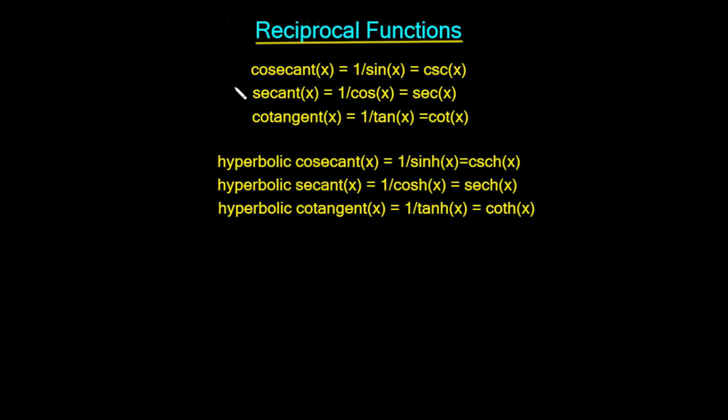We can generate another six functions. These are the reciprocals of the circular trig functions and the hyperbolic trig functions. The cosecant x is defined as 1 upon sine x, which is written as cosec x. The secant of x is 1 upon cos x, which is written as sec x. And the cotangent of x is equal to 1 upon tan x, and that's written as cot x. So we can generate these three reciprocal functions.